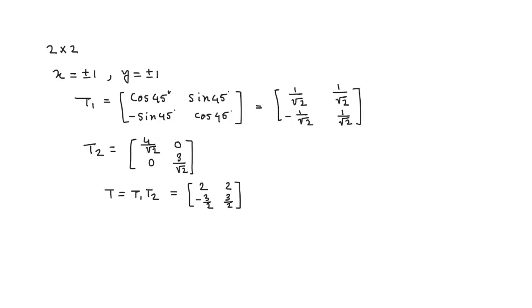T is a linear transformation. The result we get: T applied to [1, 1] equals the matrix [2, 2; -3/2, 3/2] multiplied by [1, 1]. Multiplying this, we get the result 4 and 0. This is the solution of this problem.